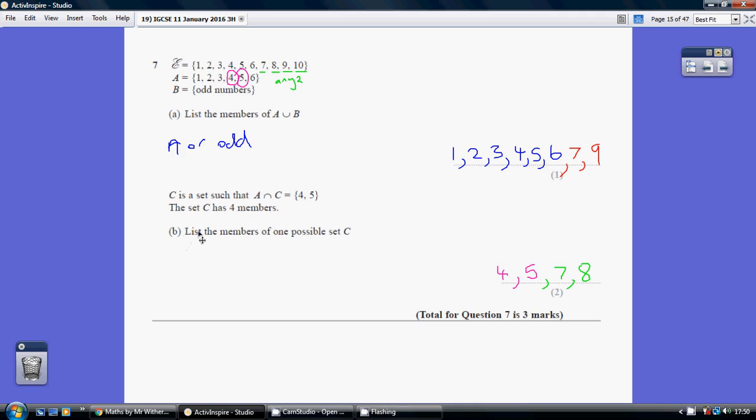Now for part B, we're looking for a set C such that A intersection C equals 4, 5. This means 'and'. These numbers are both in A and in C. The only numbers that are in A and C are 4 and 5.